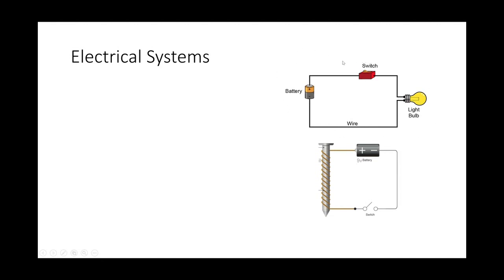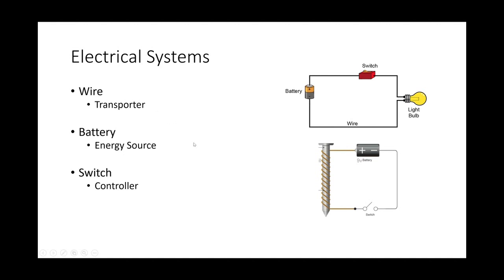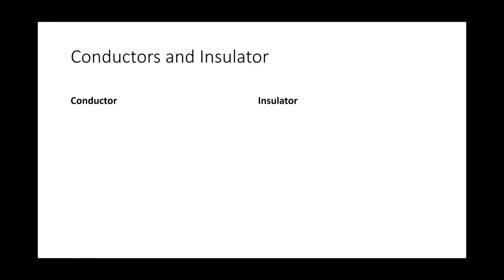Let's look at the different parts in a circuit. There will always be a wire because it carries the electricity. Then there will be a battery, which is your energy source. You have a switch, which helps you switch on and switch off the light or the electromagnet by controlling whether or not electricity flows through. And then there's the component you need to work — for example, if it's a torchlight, you need a bulb; if it's a doorbell, you need a bell. P5 usually will be tested on the bulb.